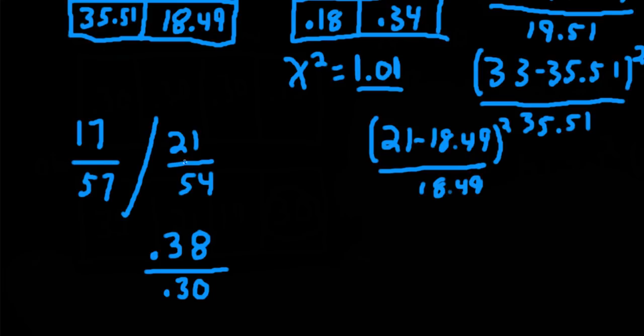And we'll get roughly 0.30. So I switched it up. I put the probability of failing given that you don't have the book in the numerator, which makes more sense here, and the probability of failing given that you do have the book. I put that in the denominator, and we'll get our relative risk of 0.38 divided by 0.3 gives us roughly 1.27.